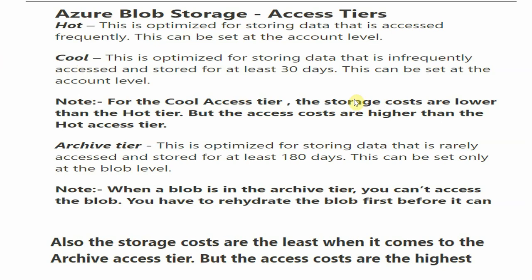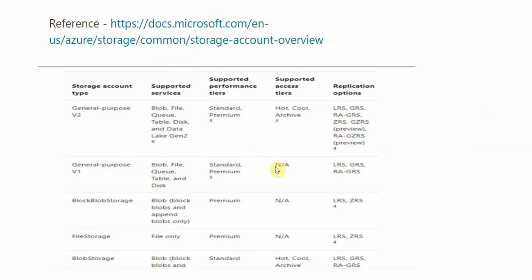For the Cool access tier, storage costs are lower than the Hot tier, but the access costs are higher since you're accessing data less frequently. The Archive tier is optimized for data that is rarely accessed and stored for at least 180 days. It can be set only at the blob level. When a blob is in the Archive tier, you must rehydrate the blob before it can be accessed. Storage costs are the lowest for Archive, but access costs are the highest.